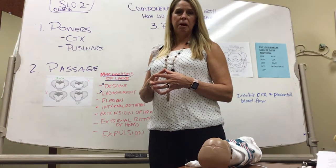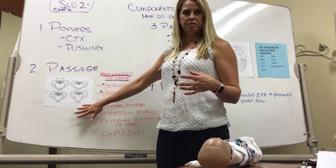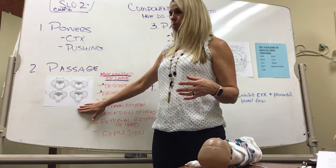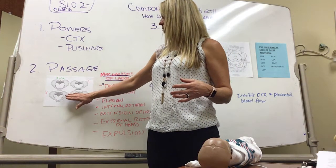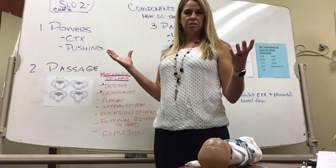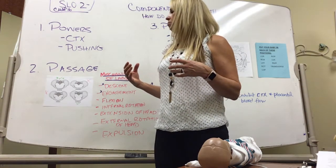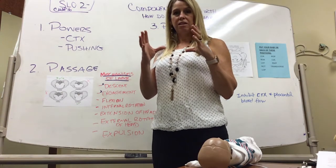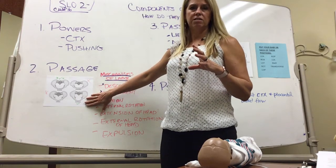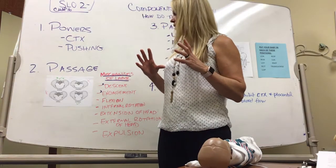The second P is the passage: is the pelvis adequate to deliver the baby? There are four types of pelvises — gynecoid, anthropoid, android, and platypoid. The best one to have is gynecoid, like a gynecologist. It is nice and round in shape, making it easy to deliver a round head through it. The other favorable one for delivery is anthropoid, which is also more round in shape.